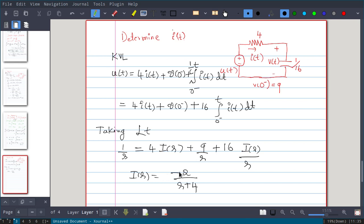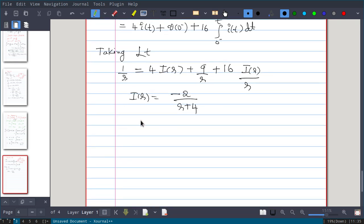Once you know i(s), you can directly find i(t): inverse Laplace transform. If you do, you will get -2 times e^(-4t) u(t) ampere.